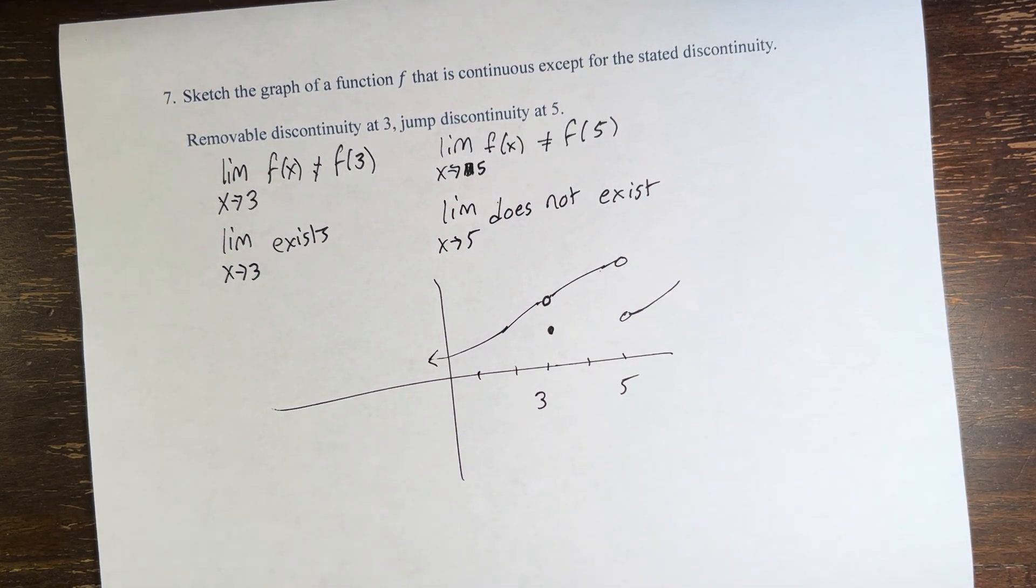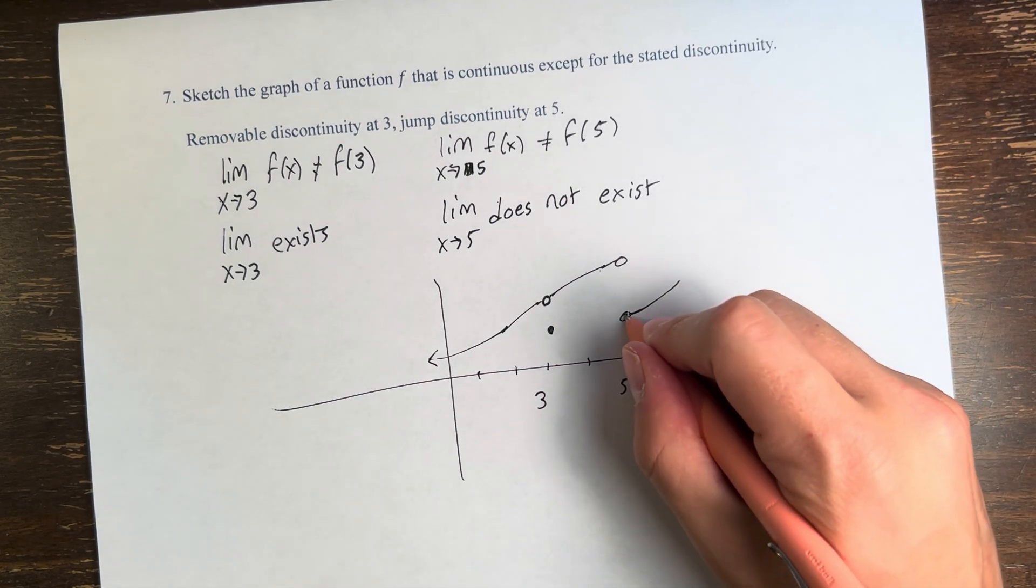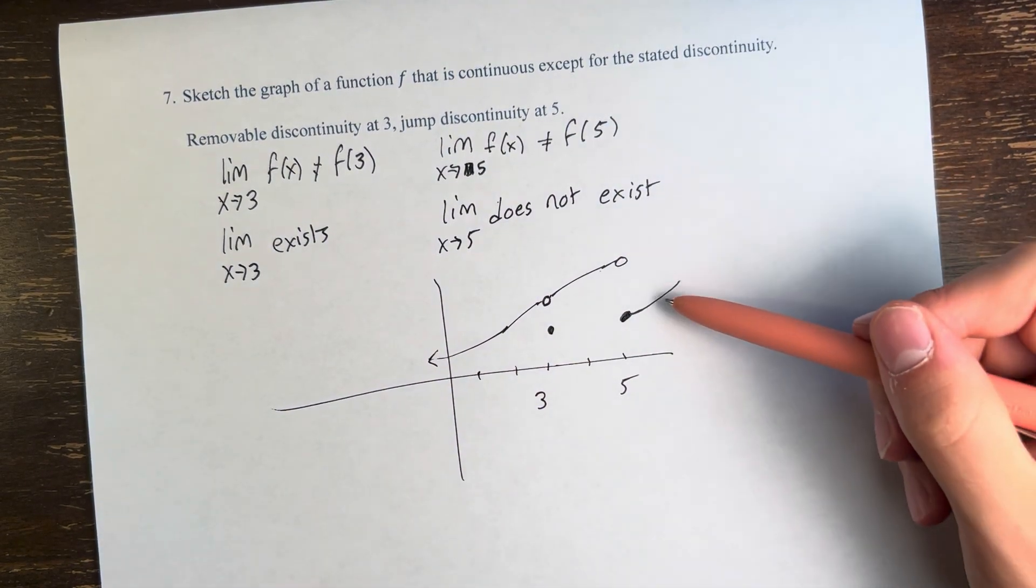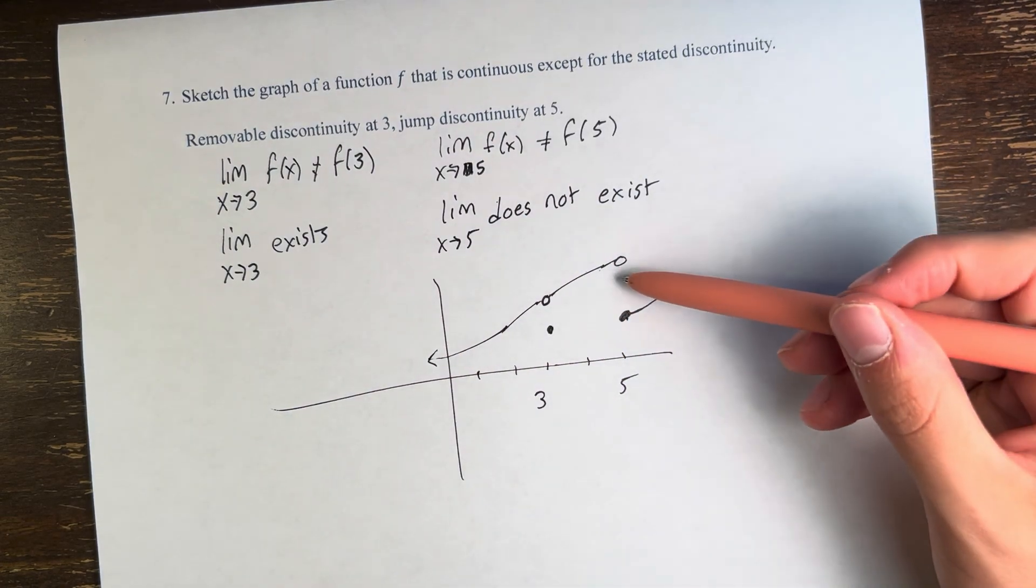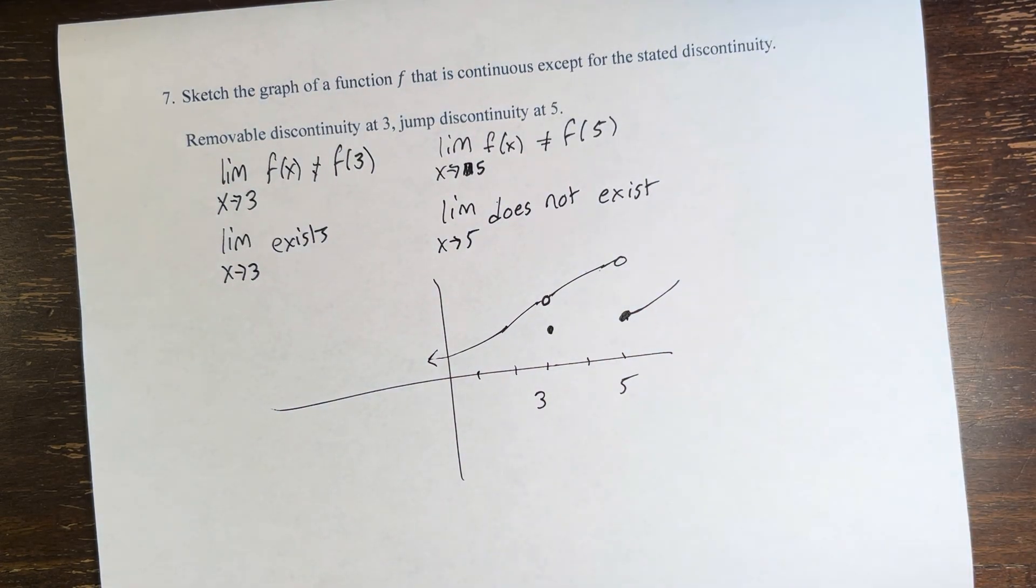And this does not mean that the limit from the right or the left doesn't exist. We can actually just say that from the right, it is approaching the value of the function, but it's not from the left. Therefore, it's discontinuous, and since the value jumps, it's a jump discontinuity.